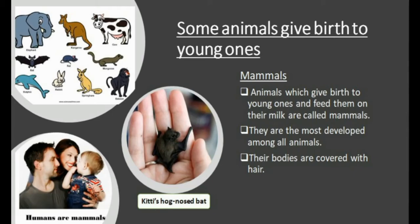The smallest living mammal is the Kitti's hog-nosed bat. It is about one inch long and weighs about two grams. Though bats fly like birds, they are mammals. Whales and dolphins are also mammals.